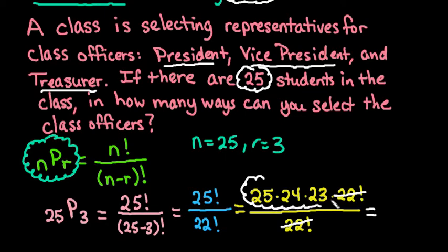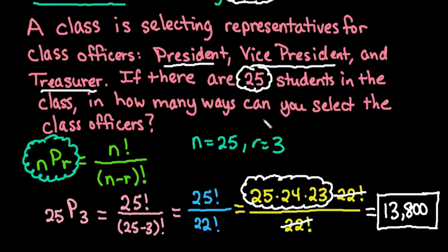And then all we would do is plug 25 times 24 times 23 into our calculator, and we find that there are 13,800 different arrangements of three people from 25. So if we have 25 people taking three at a time, there's 13,800 different permutations where order is important. If you were finding the combinations because the order wasn't important, you would end up with a smaller amount.